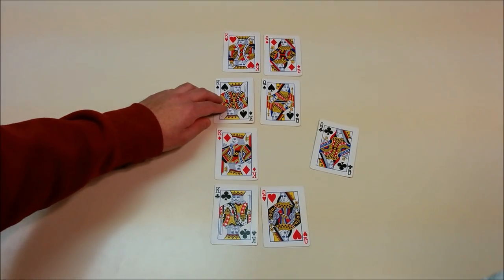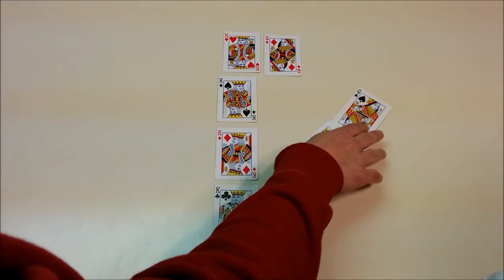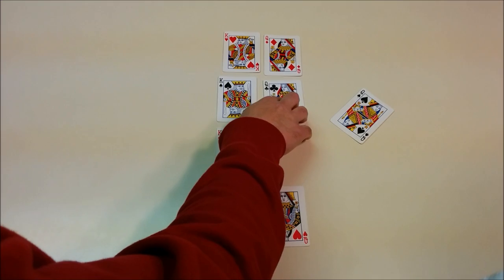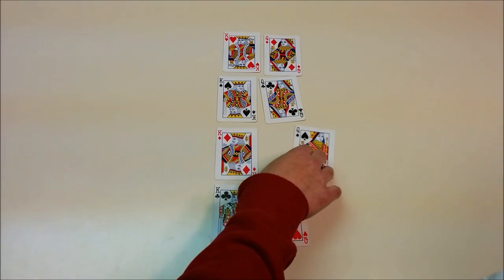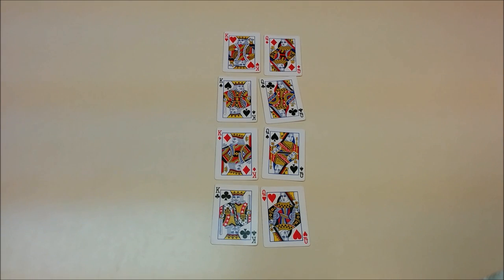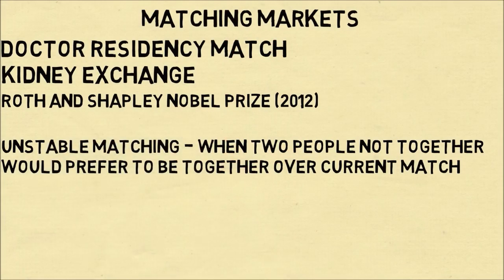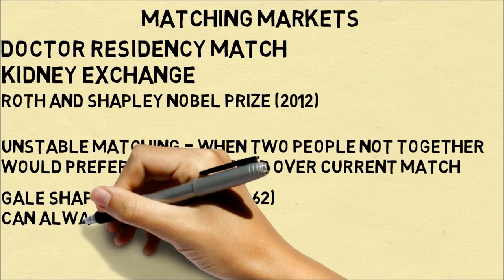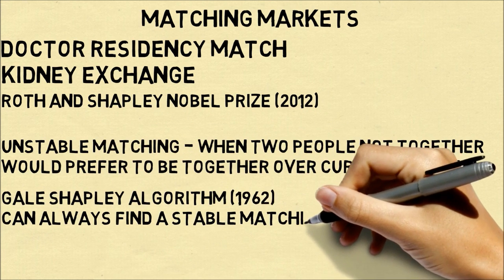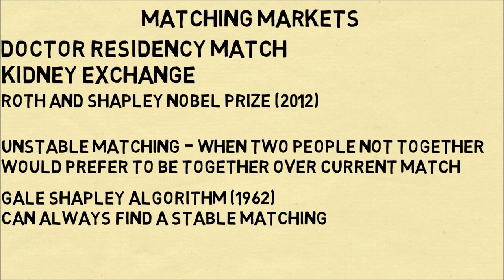You can see what the dynamics are in a matching market when you have an unstable match — it's not a good thing. You could even have a cascade where the king of spades and the queen of clubs are now matched, and the king of diamonds and the queen of spades want to be together. This would be a match that would be stable. The Gale-Shapley algorithm, developed in 1962, is a way that shows you can always find a stable matching.